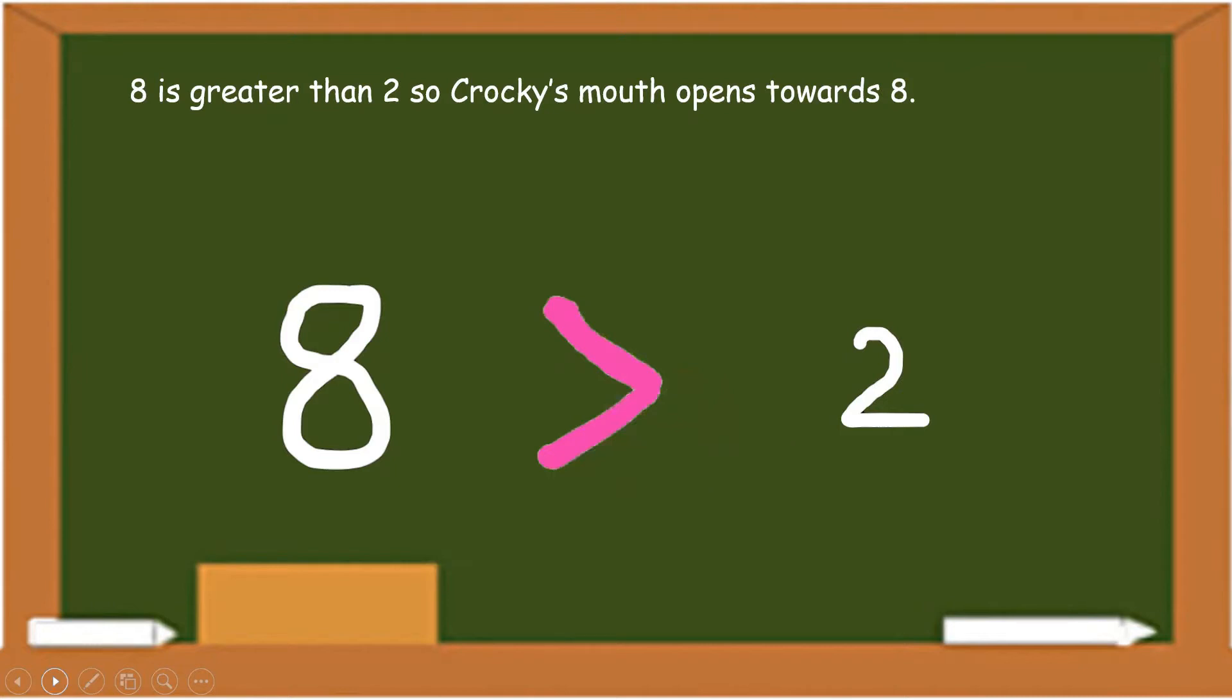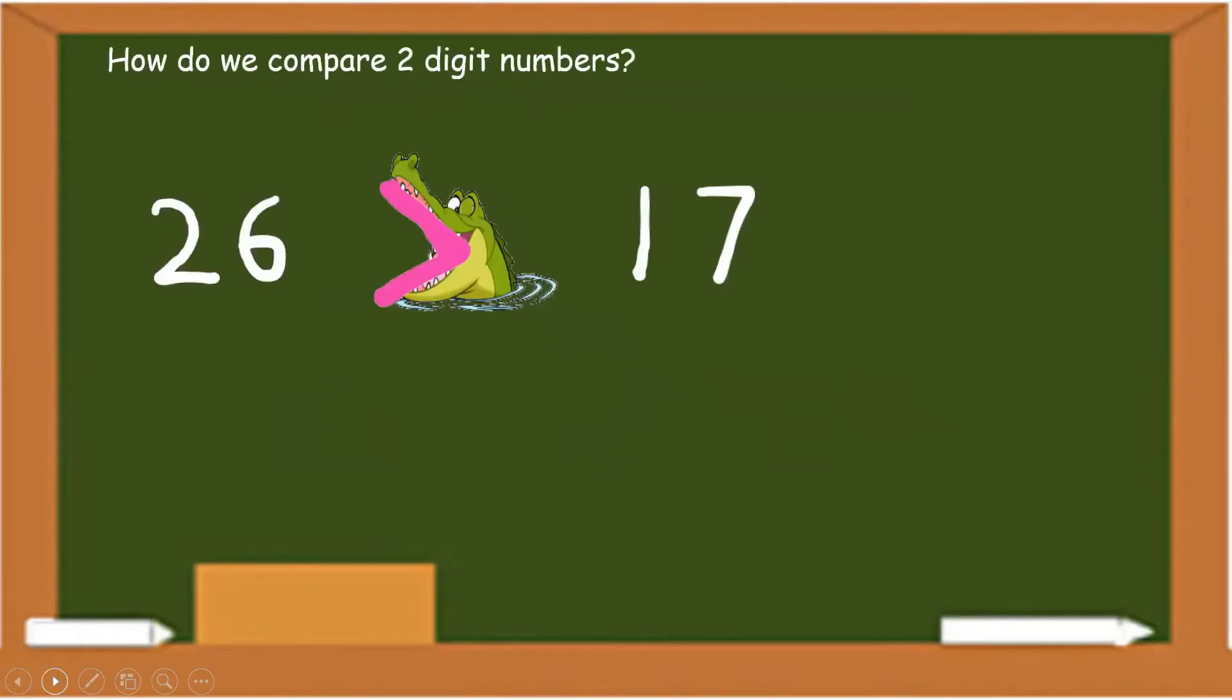This is how we compare one-digit numbers. How about comparison of two-digit numbers? It is again very simple.